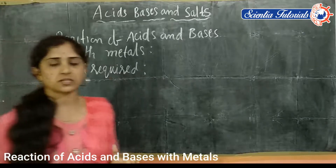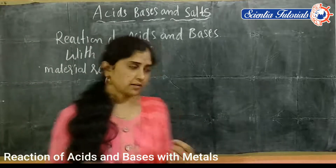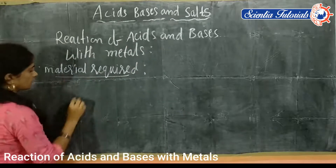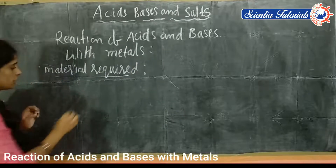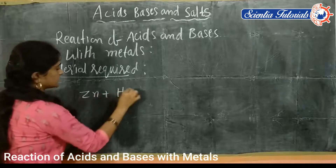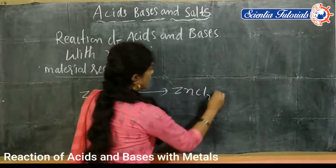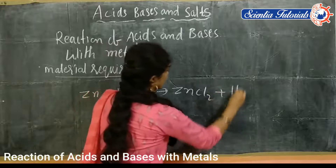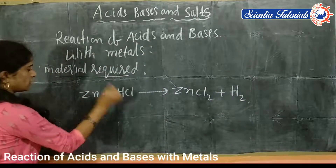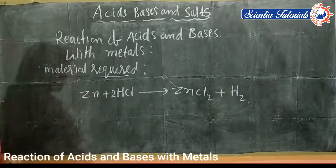How do we show this in the form of a symbolic equation? Zinc reacts with hydrochloric acid and gives zinc chloride and hydrogen gas. Is it balanced? No. So let me write 2 here — now it is a balanced equation.